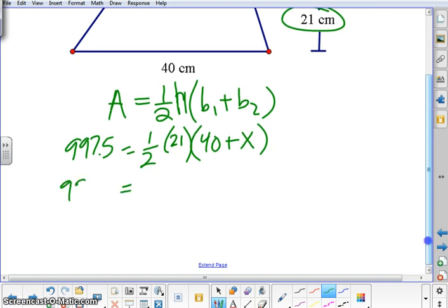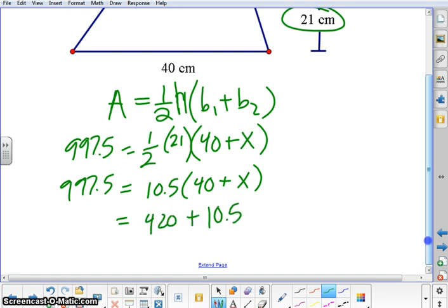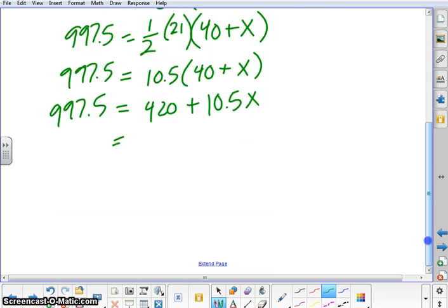All right, so after you do a little bit of the math, we can multiply these together and get 10.5. And then do a little distributive property to get 420 plus 10.5X. And then, again, 997.5. And after subtracting 420 to both sides and then dividing by 10.5, we get X equals 55 units.